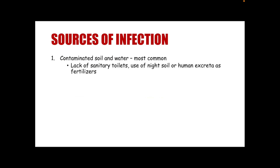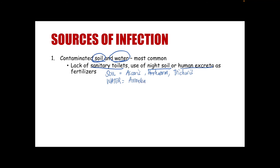For the sources of infection, primarily we have contaminated soil and water as the most common sources. These are usually due to lack of sanitary toilets, use of night soil, or human feces as fertilizers. From contaminated soil, we could harbor Ascaris, hookworm, and Trichuris (the whipworm). From contaminated water, we particularly have amoeba and Schistosoma. Those are the parasites that can be harbored as we come in contact with contaminated soil or water.